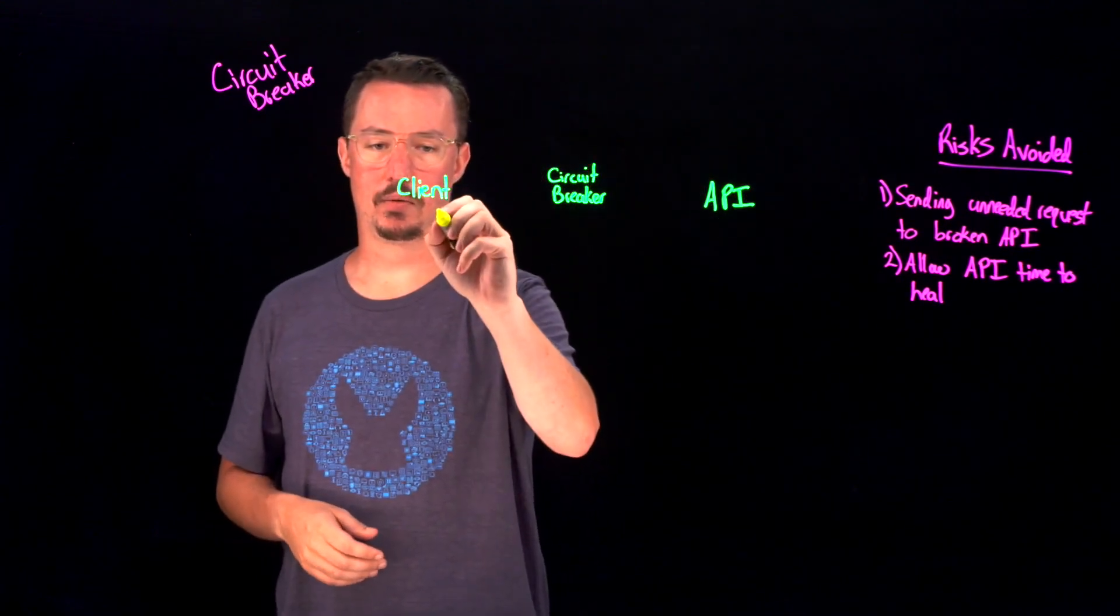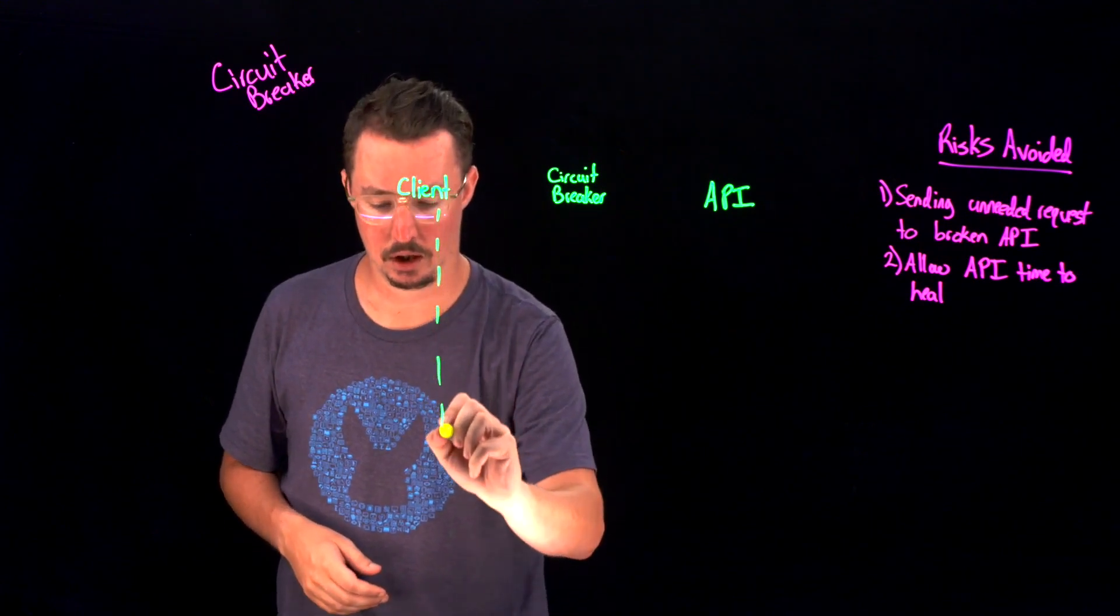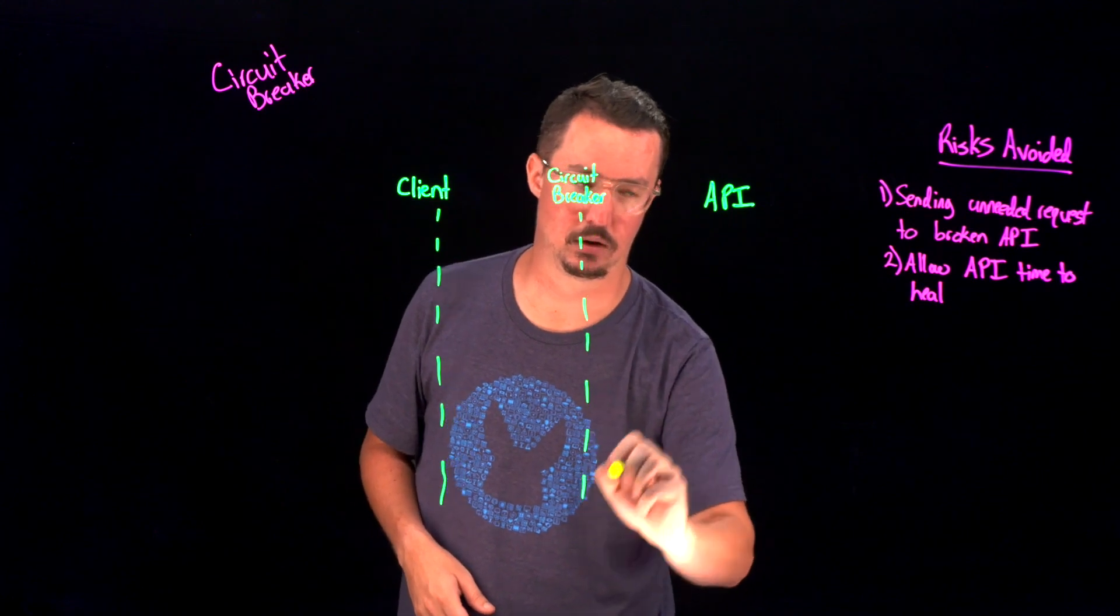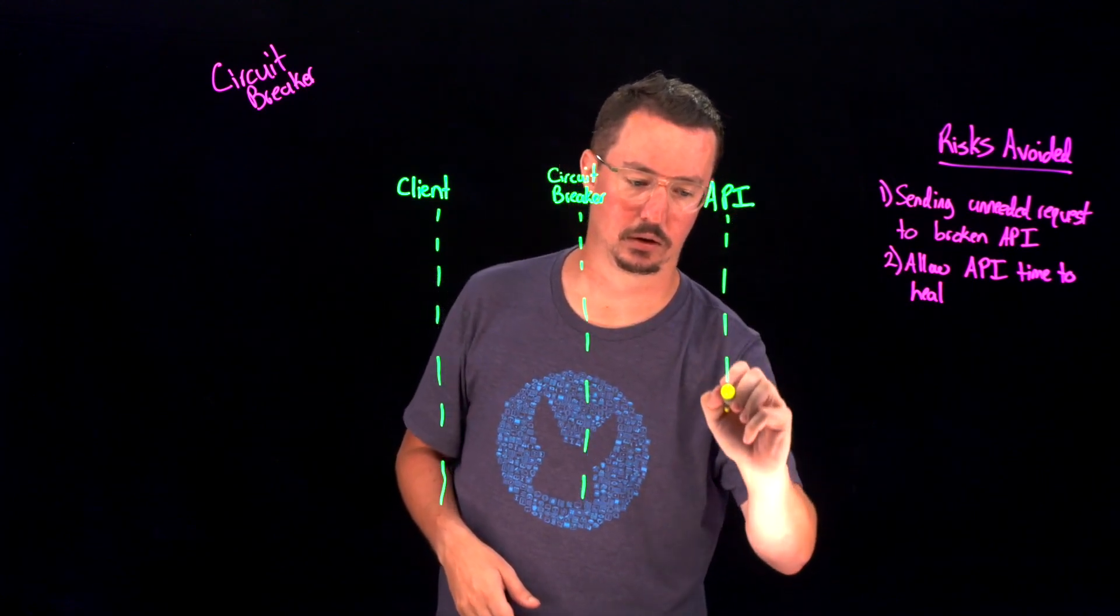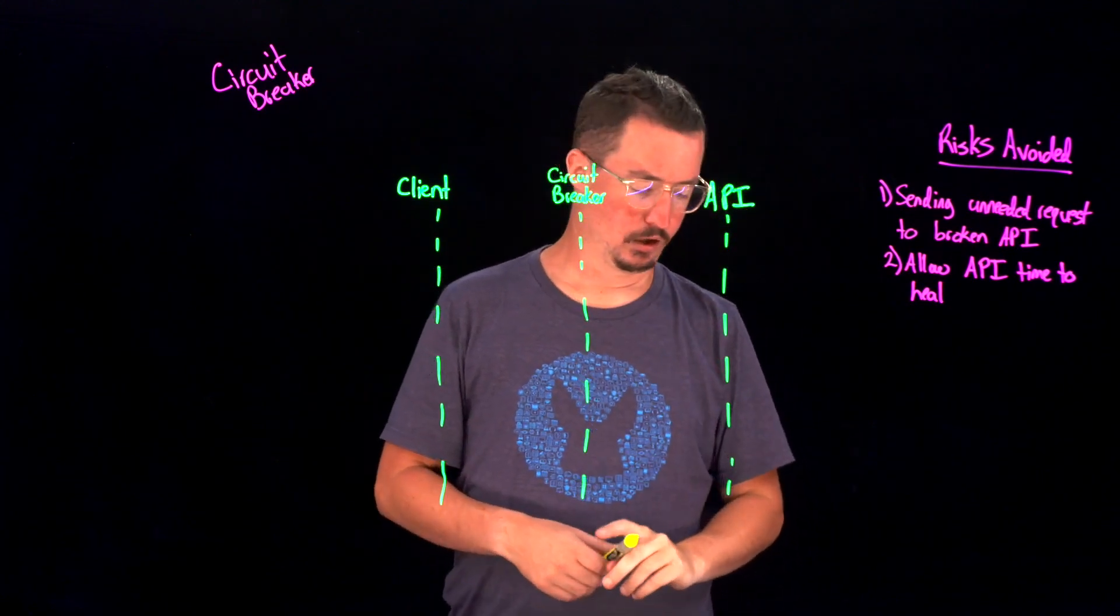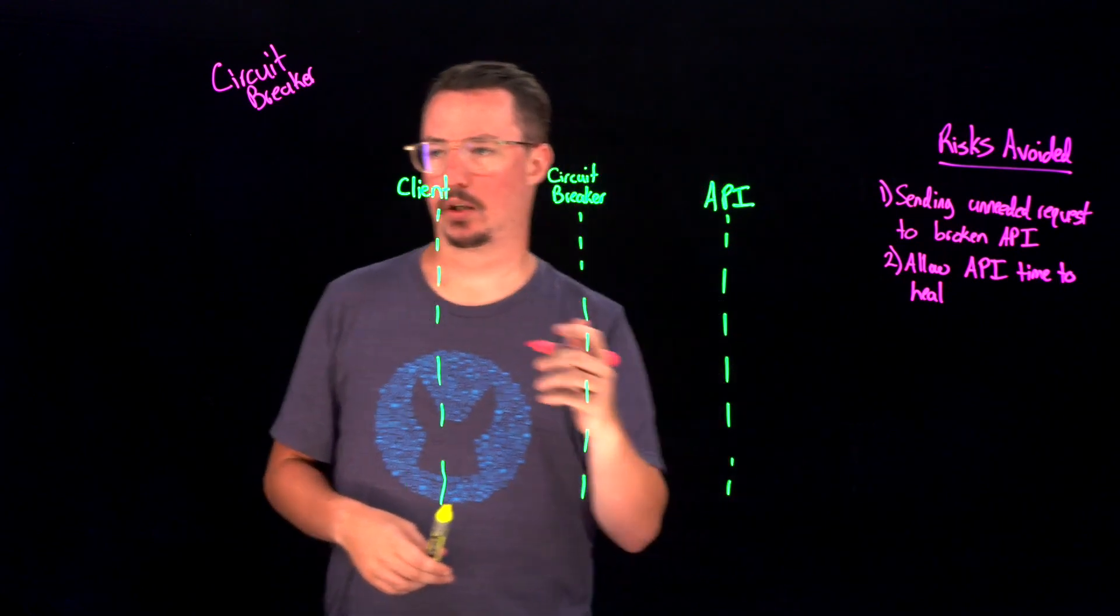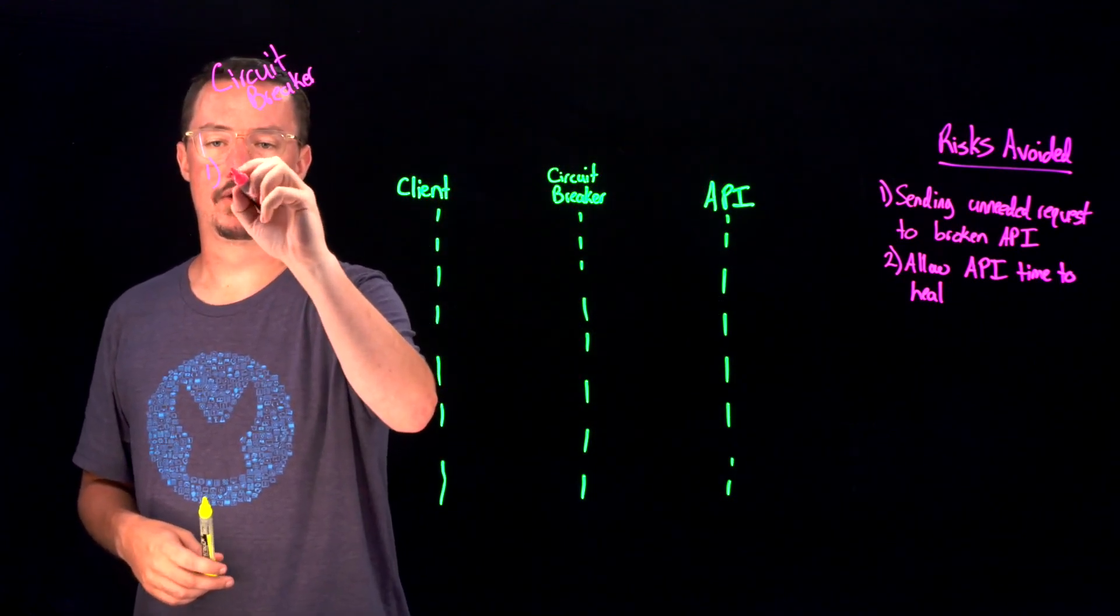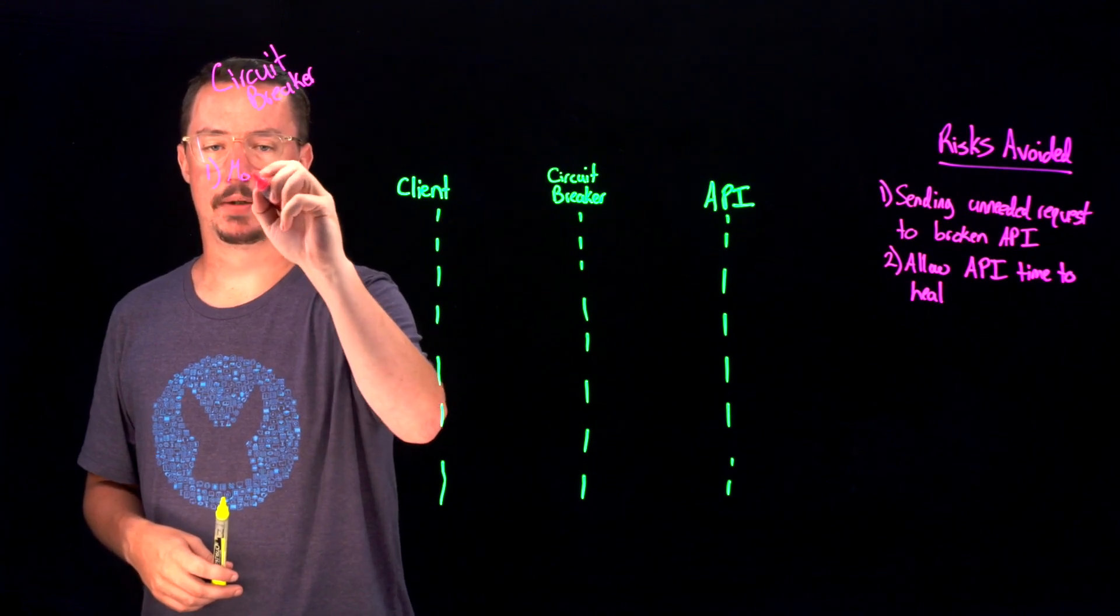So the way I'm going to represent this is just with a series of swim lanes to show how those interactions are going to look between each one of these. So the first step that we're going to do, just by nature, we're going to have the circuit breaker is going to monitor all API calls.